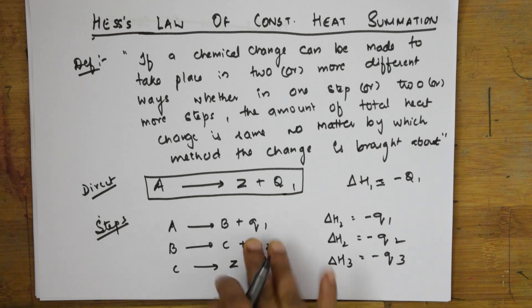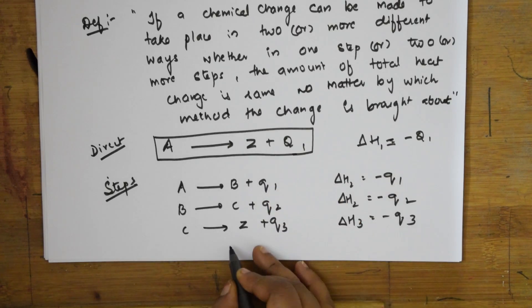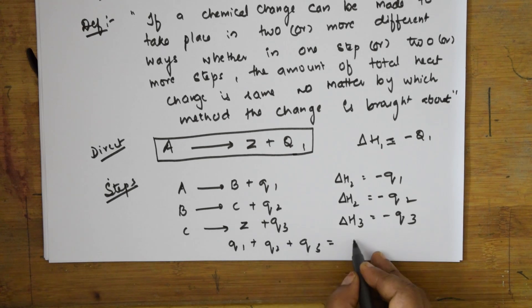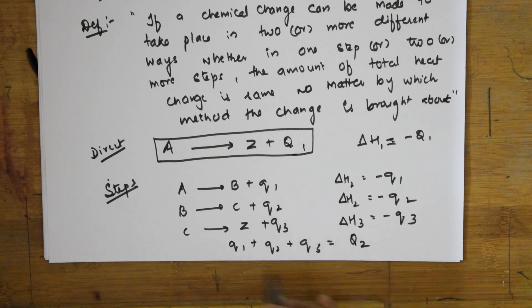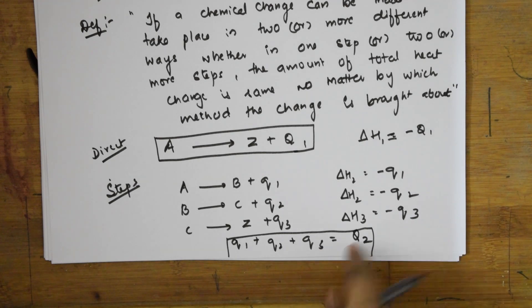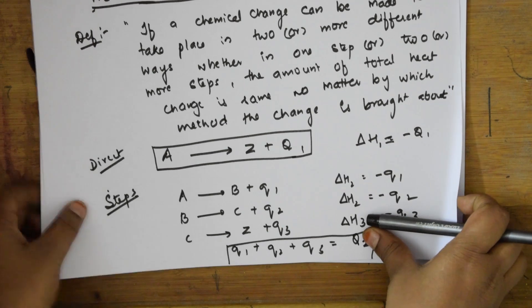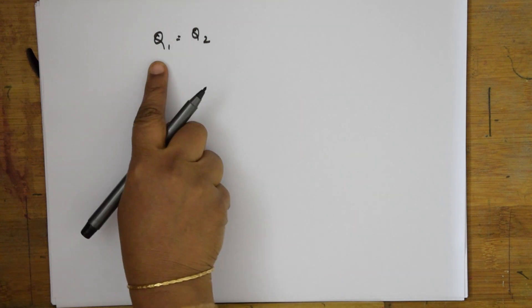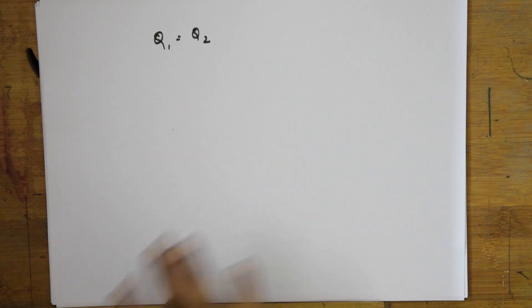The total energy change is Q1 plus Q2 plus Q3. Let's call this total Q2 for the stepwise process. Earlier, for the direct path, we called it Q1. According to Hess's Law, Q1 equals Q2. If it continues in one step or in two or more steps, the total amount of heat evolved is the same.